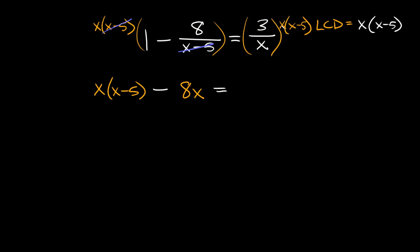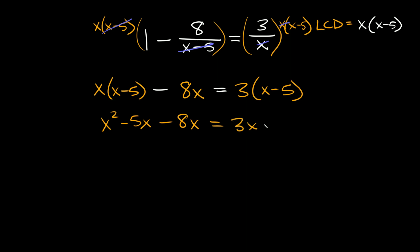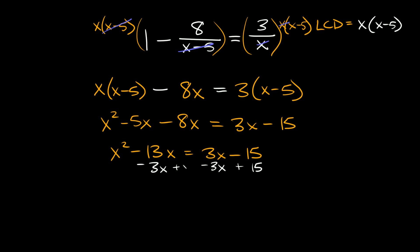On the right side, the x on top and bottom cancel, so we're left with 3 times x minus 5. Now let's multiply everything out: x times x is x squared, so we have x squared minus 5x, and that's minus 8x, equal to 3x minus 15. Combining like terms: x squared minus 13x equals 3x minus 15. Moving everything to the left side — subtract 3x and add 15 — those cancel out, leaving x squared minus 16x plus 15 equals 0.